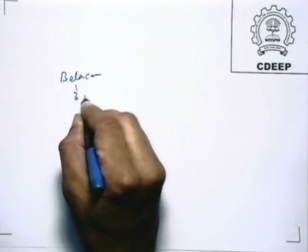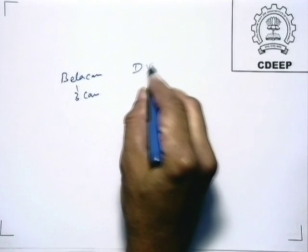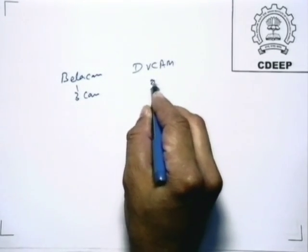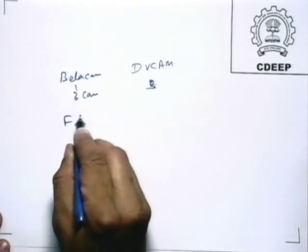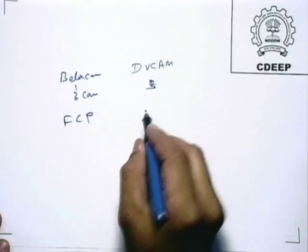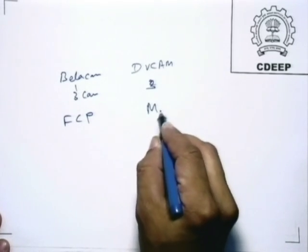At present we have Beta cam — 3 Beta cameras — and DV cam — 3 cameras again. For editing we have Final Cut Pro (FCP), which is the latest, and we have Media 100. Many people might not know about Media 100, but that was the old machine available with us — the first generation of non-linear editing. We have experience ranging from basic cut-to-cut editing all the way up to the latest possible editing.